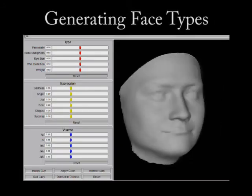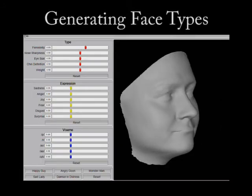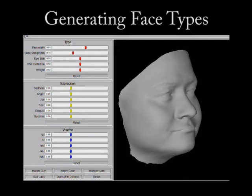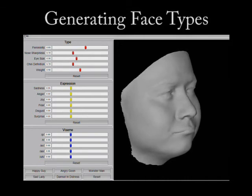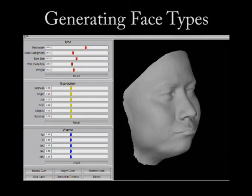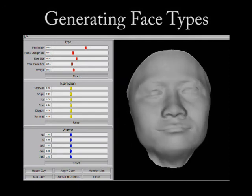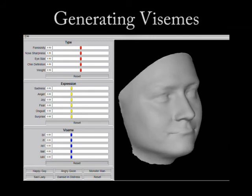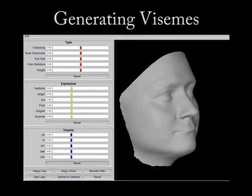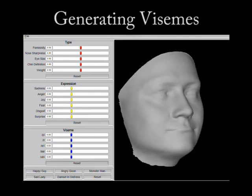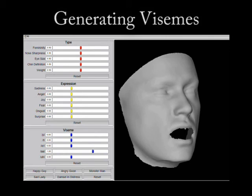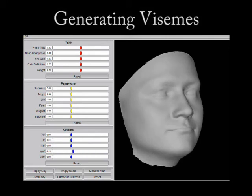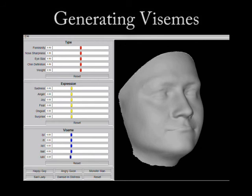New face types can also be generated. Here, we start with the average face and enhance the femininity. We then lower the chin definition, eye size, and nose sharpness. Finally, our system allows the user to generate viseme poses for any generated face. This type of control could be used to provide realistic facial movement to accompany audio tracks using existing phoneme detection techniques.